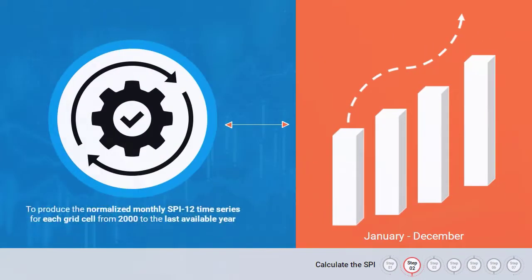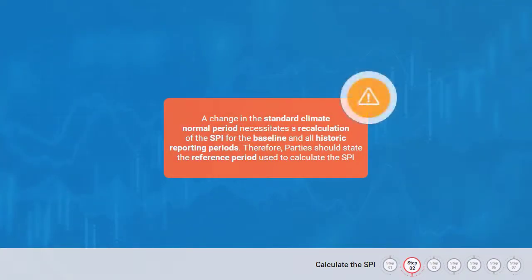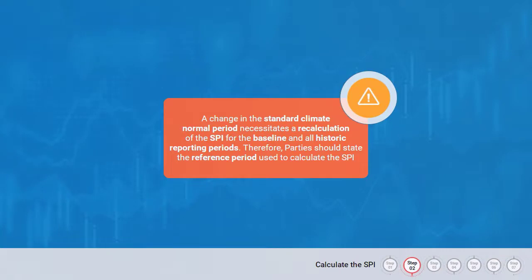This produces the normalised monthly SPI-12 time series for each grid cell from 2000 to the last available year. A change in the standard climate normal period necessitates a recalculation of the SPI for the baseline and all historic reporting periods. Therefore, parties should state the reference period used to calculate the SPI.